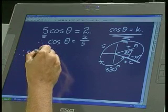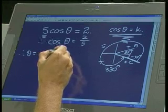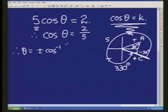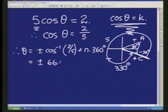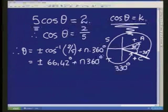Okay, so let's go for it. θ is thus plus or minus the cos to the minus one of two fifths plus multiples of my period. Now all you need to do is punch this into your calculator. Once you've done that, you'll see that you get 66.42 degrees plus multiples of 360.